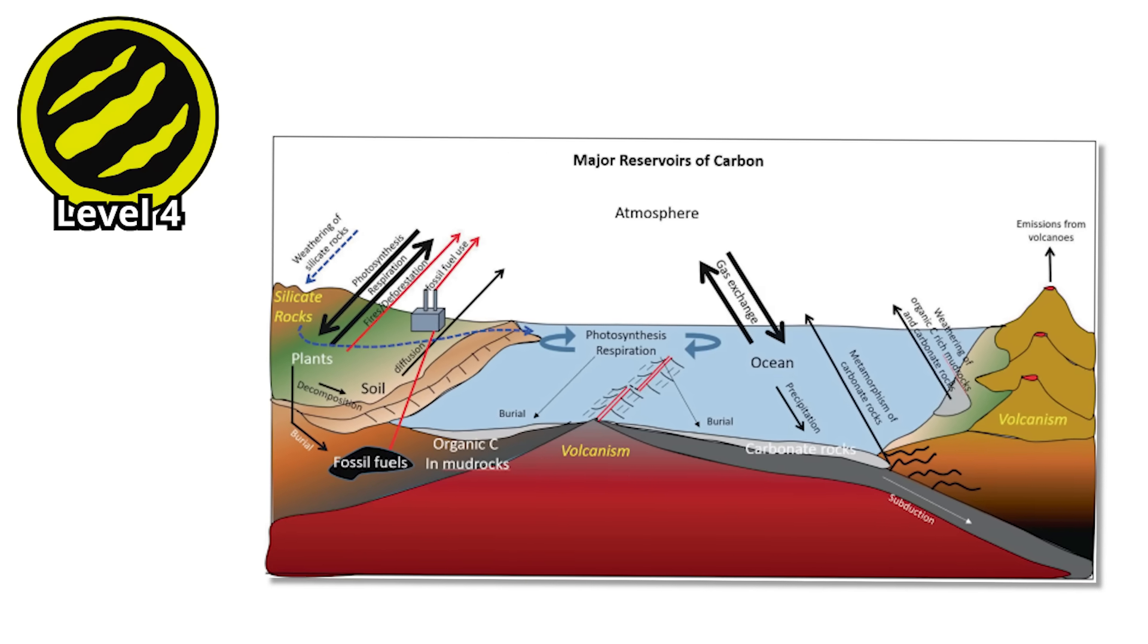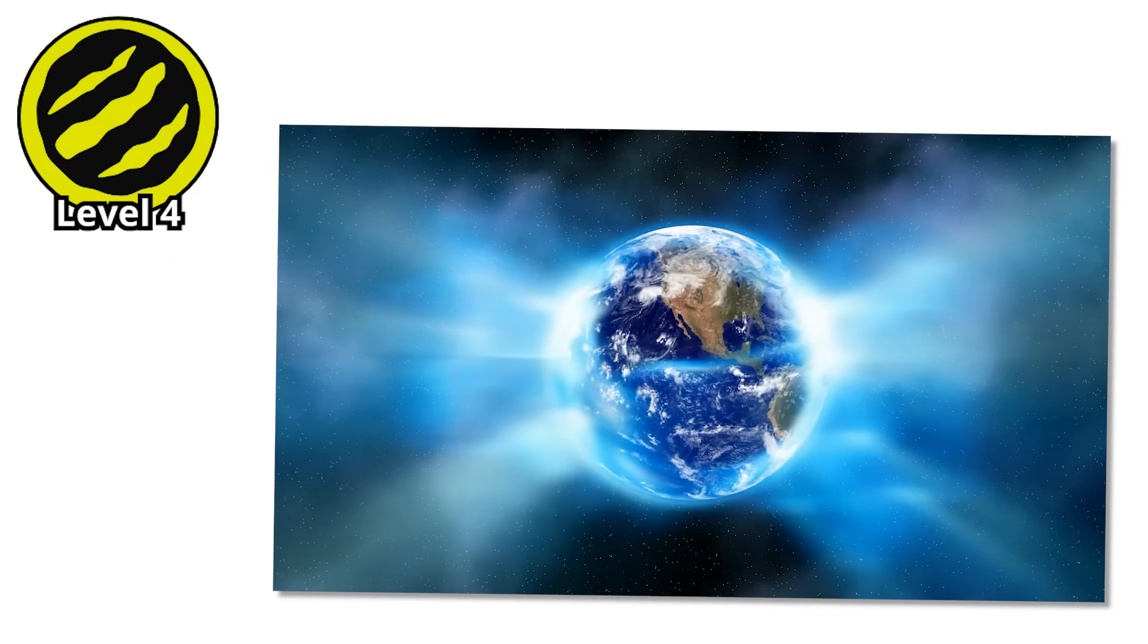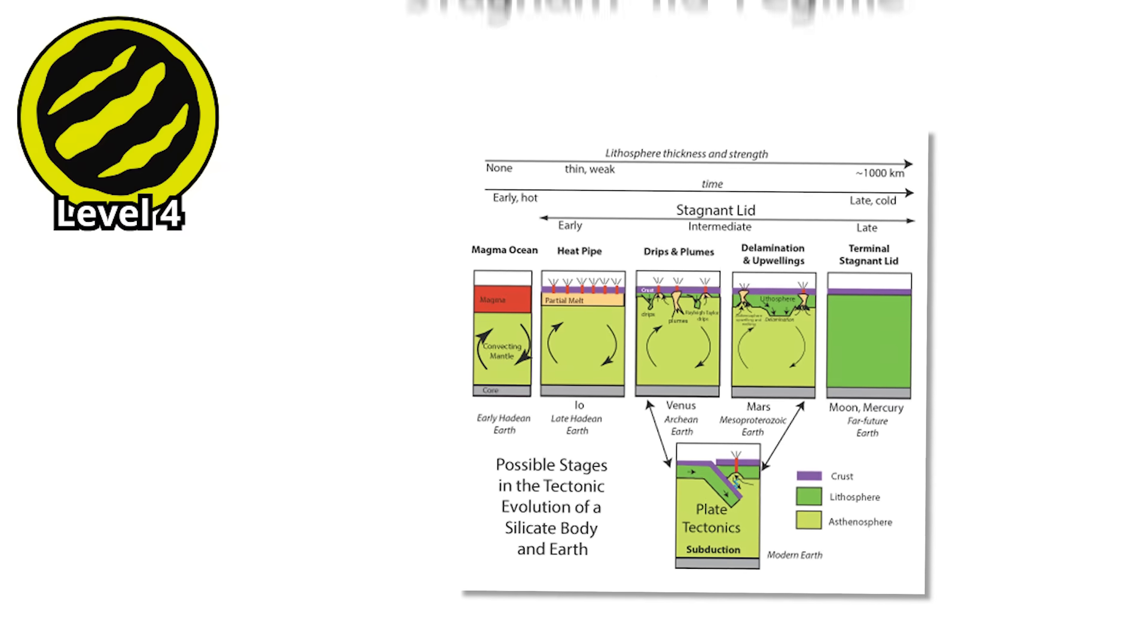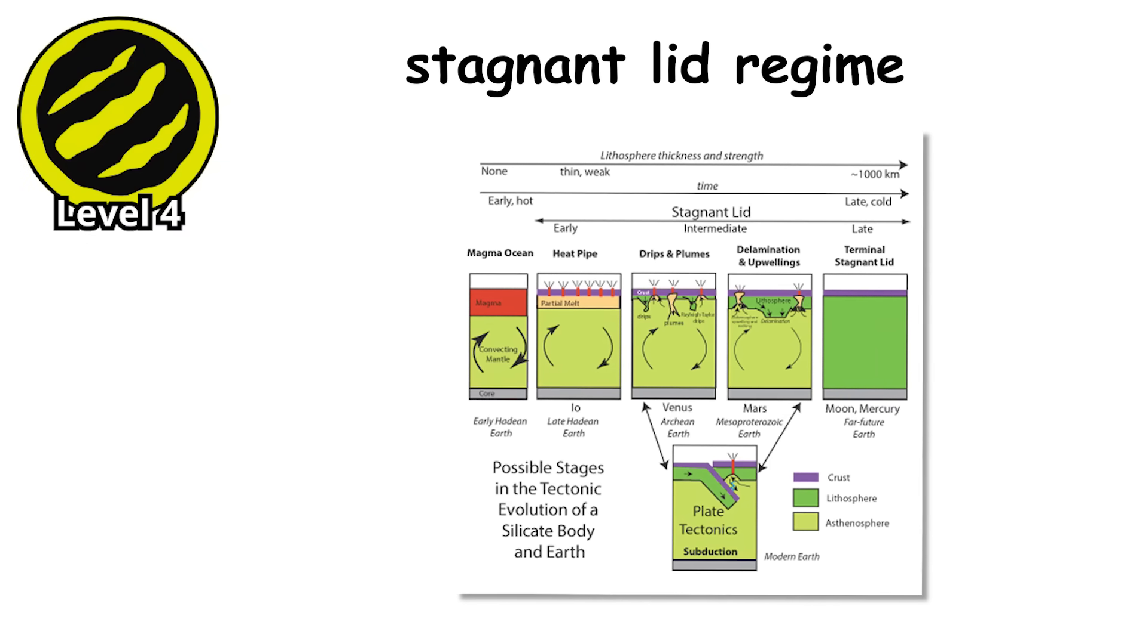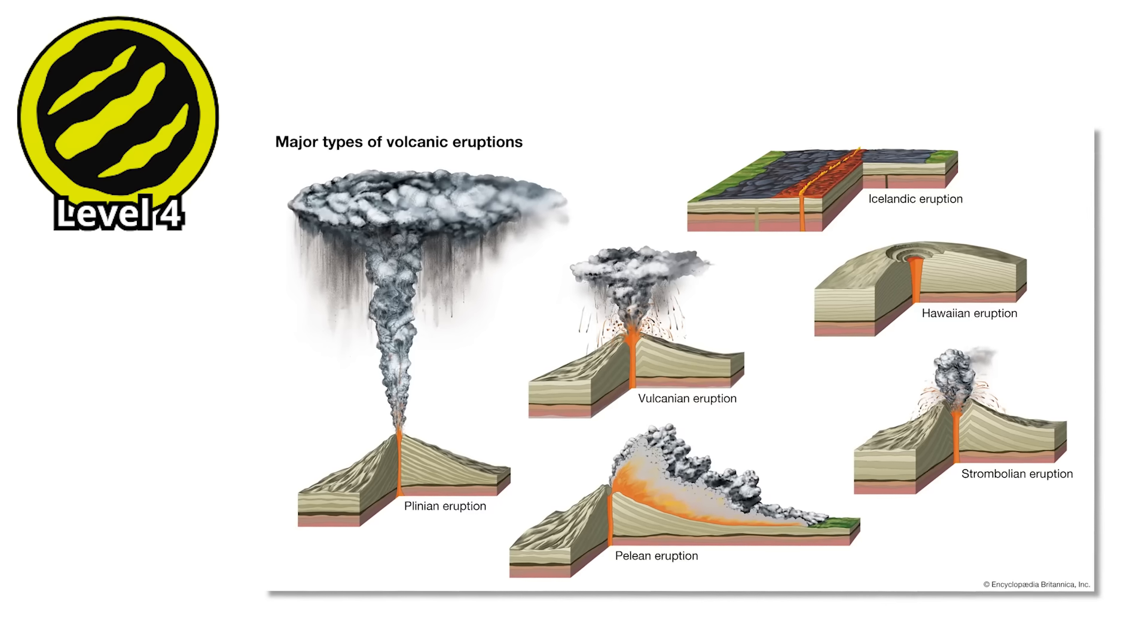But here's where super Earths get really interesting - plate tectonics. On Earth, our shifting crustal plates are crucial for regulating climate and maintaining conditions for life. On a super Earth, the increased gravity and pressure might make plate tectonics impossible, locking the planet into a stagnant lid regime where the crust never moves. Or the opposite could be true - hyperactive tectonics with constant volcanic eruptions.